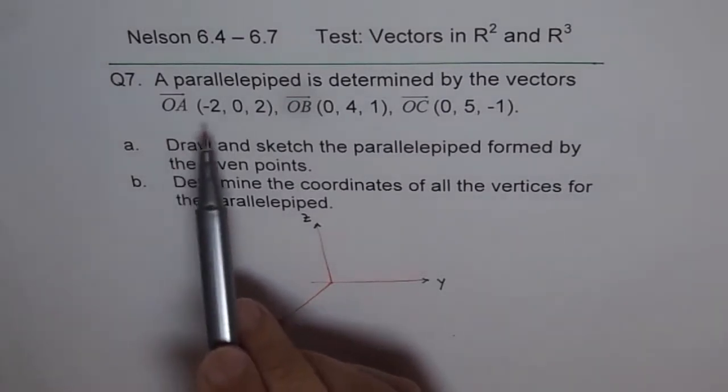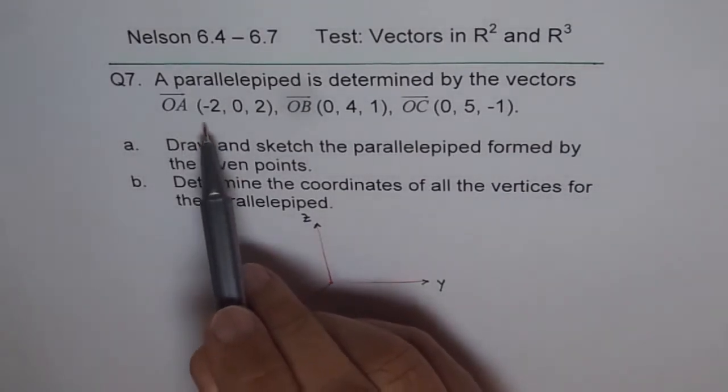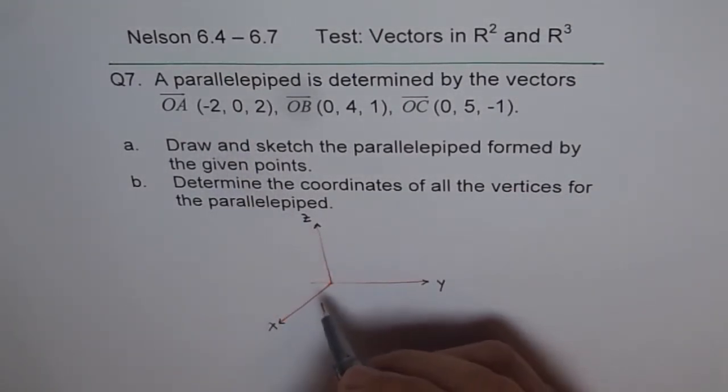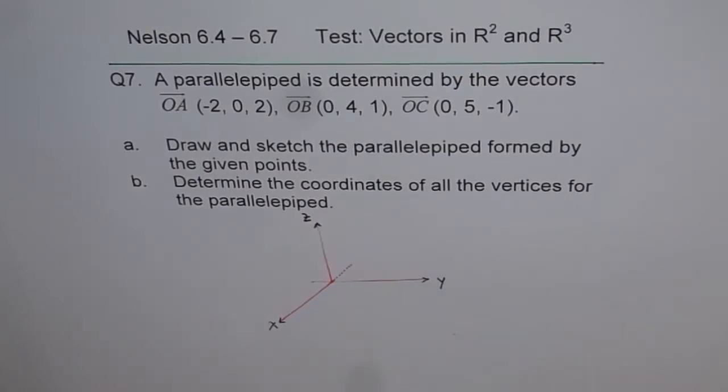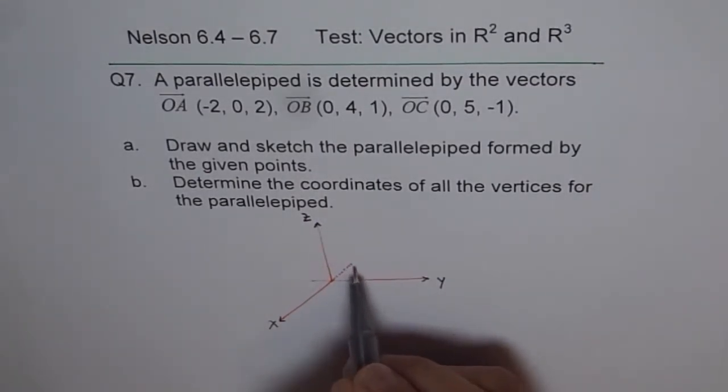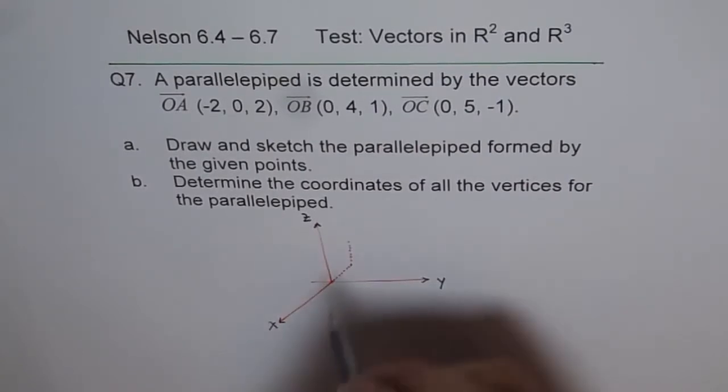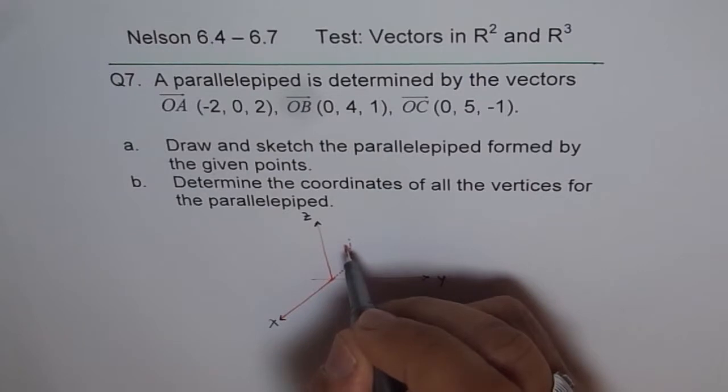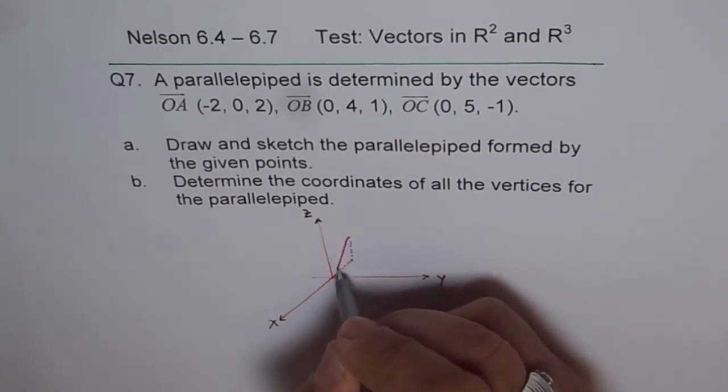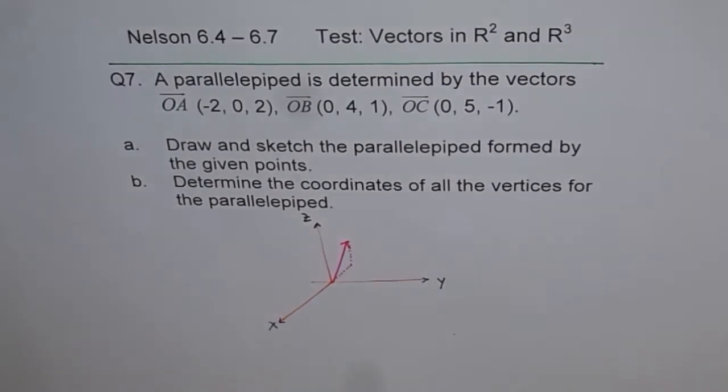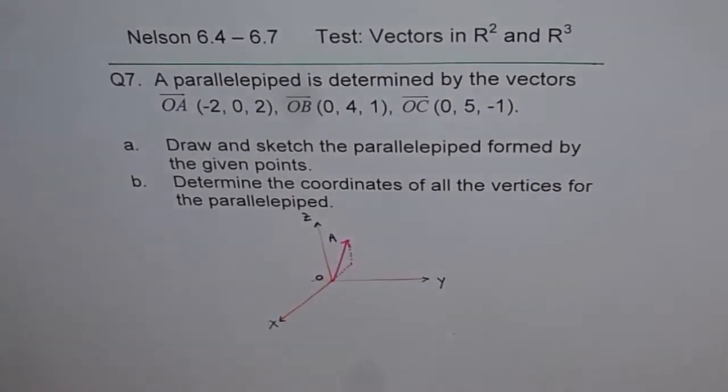Now, position vector OA is one side of our parallelepiped. OA is (-2, 0, 2). That means you'll move -2 units in x towards minus direction. Let's say this is 1 and this is 2, so that becomes -2. Then 0 along y, so you don't really move. And then 2 along z-axis, so you move here 1 and then 2. So once you come to this position, it's position vector OA, that's point A in R3. So join this point with the origin. That is my first vector, OA.